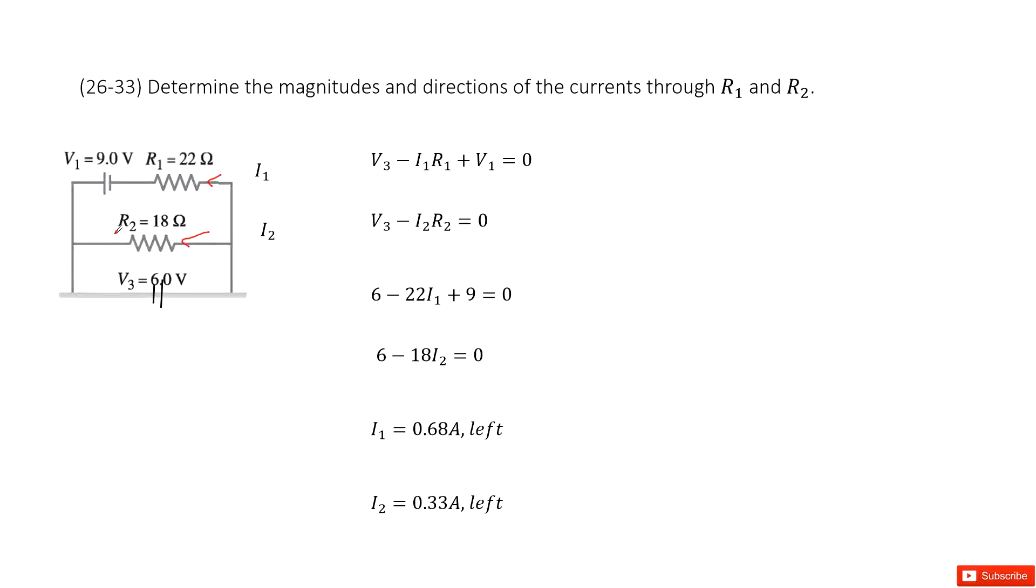But we have Kirchhoff's loop rule to do that. So first of all, we can draw a first loop. This is from V3, goes through R1, then goes through V1, then comes back anti-clockwise.